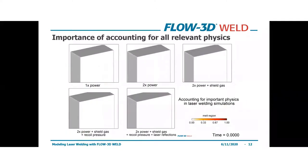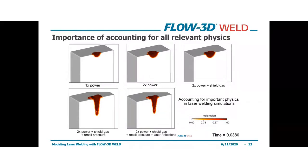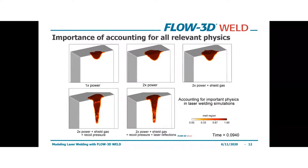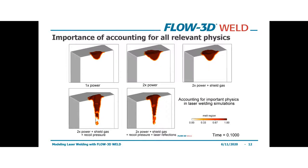What do I mean by accounting for the relevant physics? Here we can see the effect of adding physics models to the simulation. Starting on the top left, 1x power shows a conduction mode weld, and when we increase power to 2x, the melt pool gets wider and deeper. Next, we see the effect of shield gas pressure on melt pool dynamics. When we add vaporization and recoil pressure, we get an entirely different molten profile with keyhole formation. And accounting for laser reflections further propagates that keyhole formation, demonstrating why these physics can be crucial for an accurate understanding of your process.